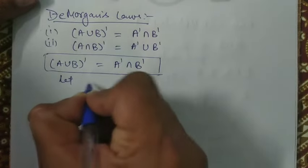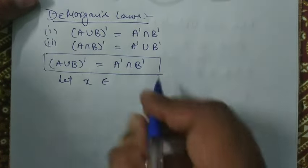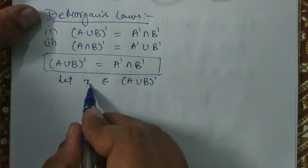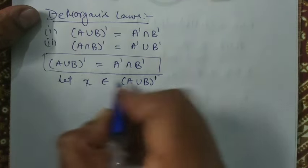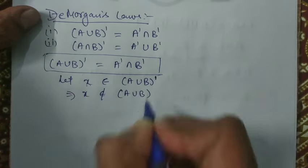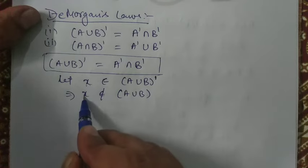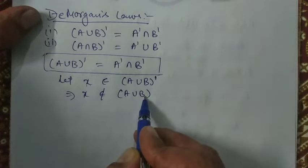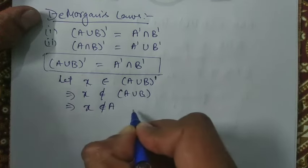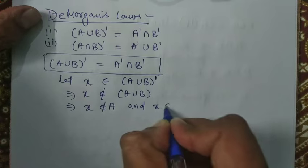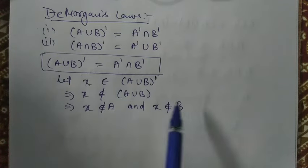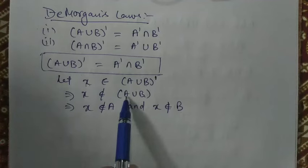Suppose there is an element X and it belongs to the complement of A union B. If X belongs to the complement of A union B, then it means this element X does not belong to A union B. Now if an element X does not belong to A union B, then it means X does not belong to A as well as X does not belong to B — only then X will not belong to A union B.